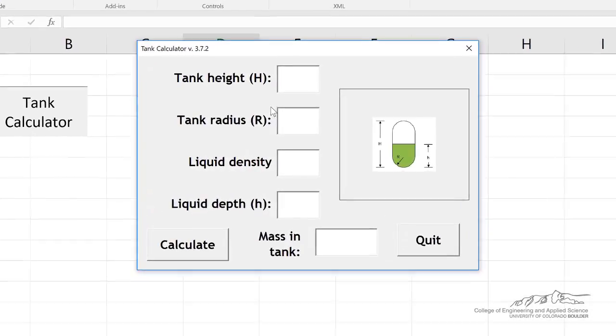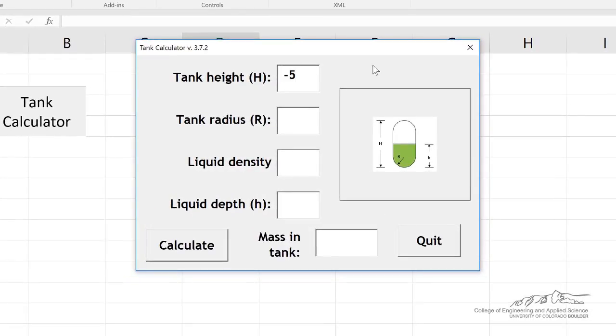What I mean by this is, right now, we don't have anything to protect the user from entering negative 5, and it's going to give us actually a negative mass. And we obviously don't want that.